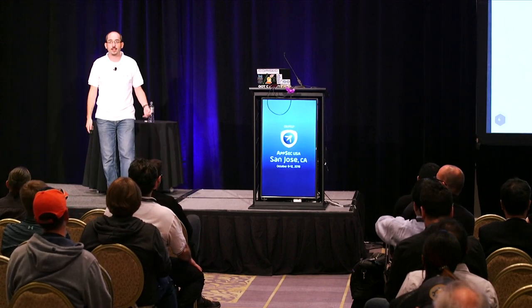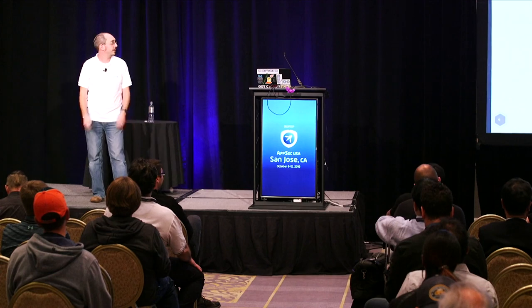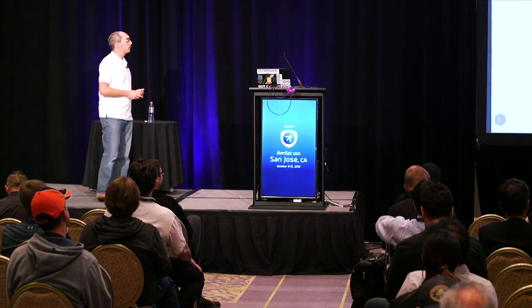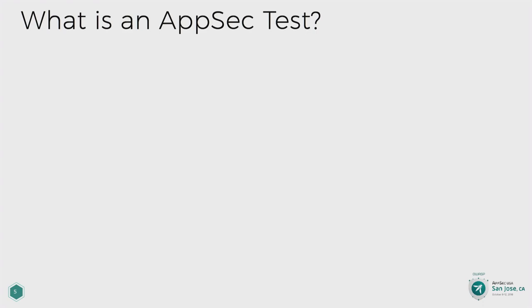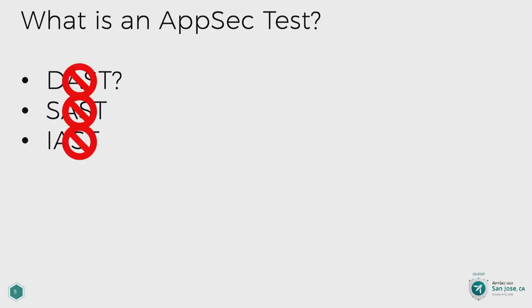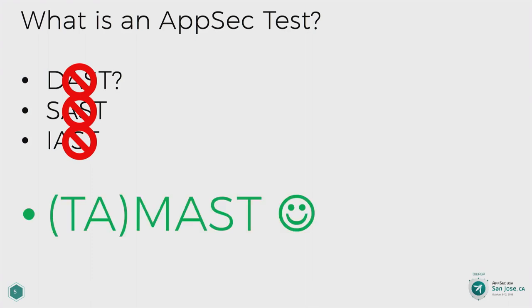That's about what I'd expect based on how I pitched the talk, so we'll come back to that in a second. When I say 'AppSec test,' it's a little bit of an overloaded term. I'm not talking about DAST or IAST — those automated tools that automatically find vulnerabilities from your code. I'm talking about TANAST, which is an acronym I just made up.